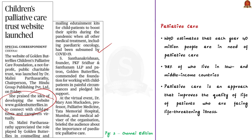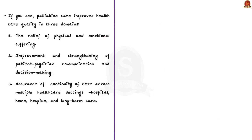According to WHO, each year 40 million people are in need of palliative care, of which 78% live in low and middle income countries. Palliative care is an approach that improves the quality of life of patients facing life-threatening illness. It tries to address the suffering of the patient — through palliative care, we are not only treating physical symptoms, but also providing mental and moral support to patients.